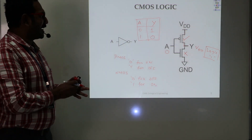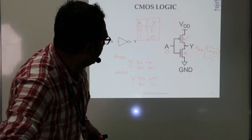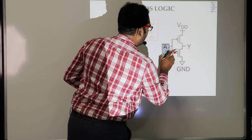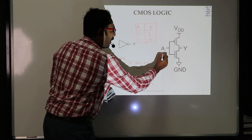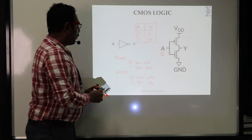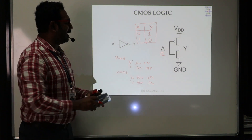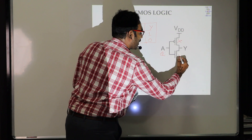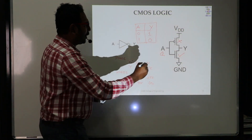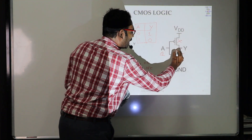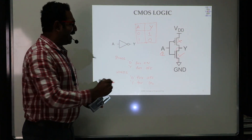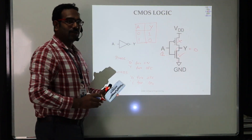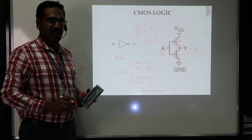Now we can examine the other input combination where input A is 1. For PMOS, 1 means OFF condition, so the PMOS transistor is switched OFF and the NMOS transistor is switched ON. Now the output is directly connected with ground through the NMOS transistor, which means it is grounded — so output Y is 0. In both conditions, we have verified how a CMOS inverter works.